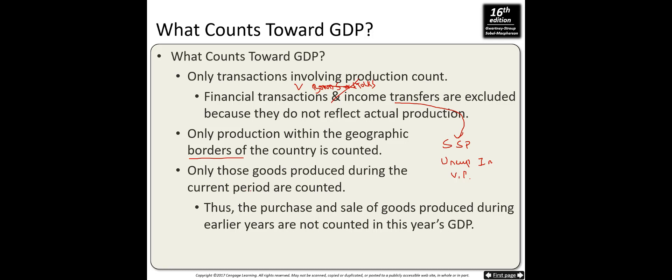Only production within the geographic borders of the country is counted. For instance, if Mazda — not a U.S. company — produces in Texas, it is included in the GDP. But Ford producing in Mexico, although Ford is an American company, is not included in the GDP. Everything produced inside the country is included in GDP regardless of the nationality of the company. Also, only goods produced during the current period are counted — the purchase and sale of used goods, like reselling an iPhone 13 for $800, are not included because the purchase price was already counted when it was first produced.